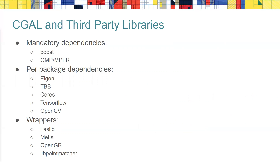The CGAL project leverages on other highly specialized libraries. Boost is needed everywhere, and when a Boost sub-library makes it into the C++ standard, we switch to the standard version. GMP and MPFR are arbitrary-precision number types used to make CGAL robust — meaning they handle problems related to floating-point arithmetic. For certain packages: Eigen provides solvers for meshing, Ceres provides a nonlinear solver used by a smoothing algorithm, and neural networks of TensorFlow and random forests of OpenCV are used by point cloud classification. We also provide wrappers for LASlib for IO of point clouds with classification information, METIS for graph partitioning, and OpenGR and libpointmatcher for point cloud registration.